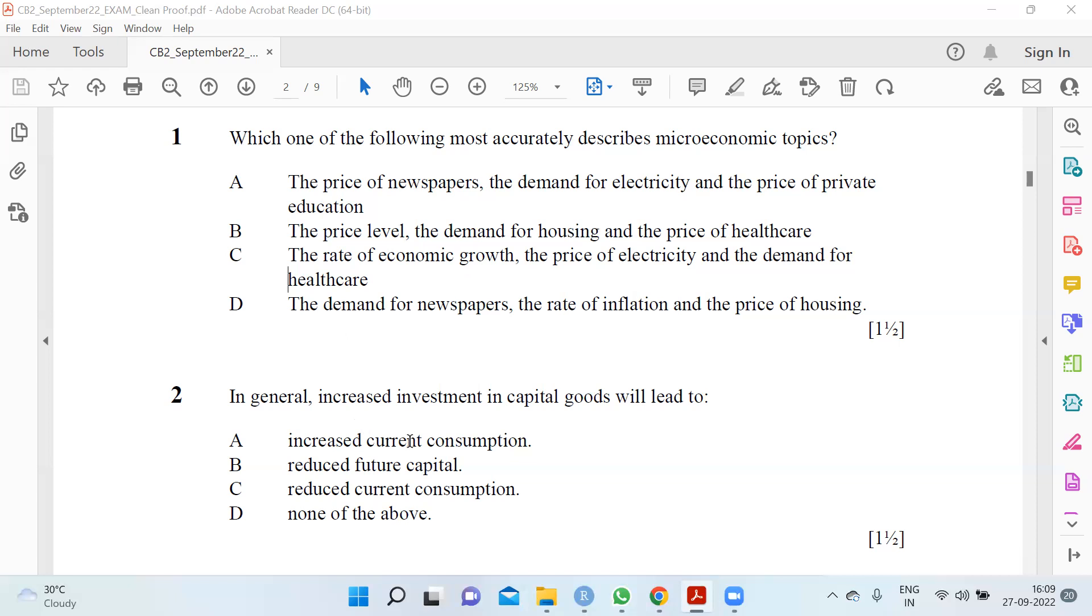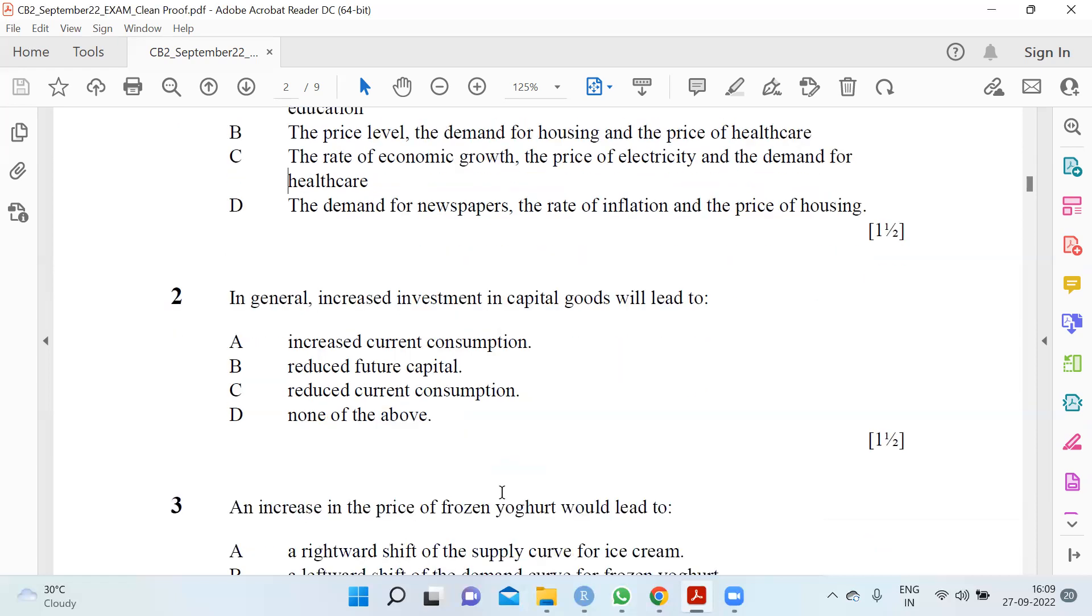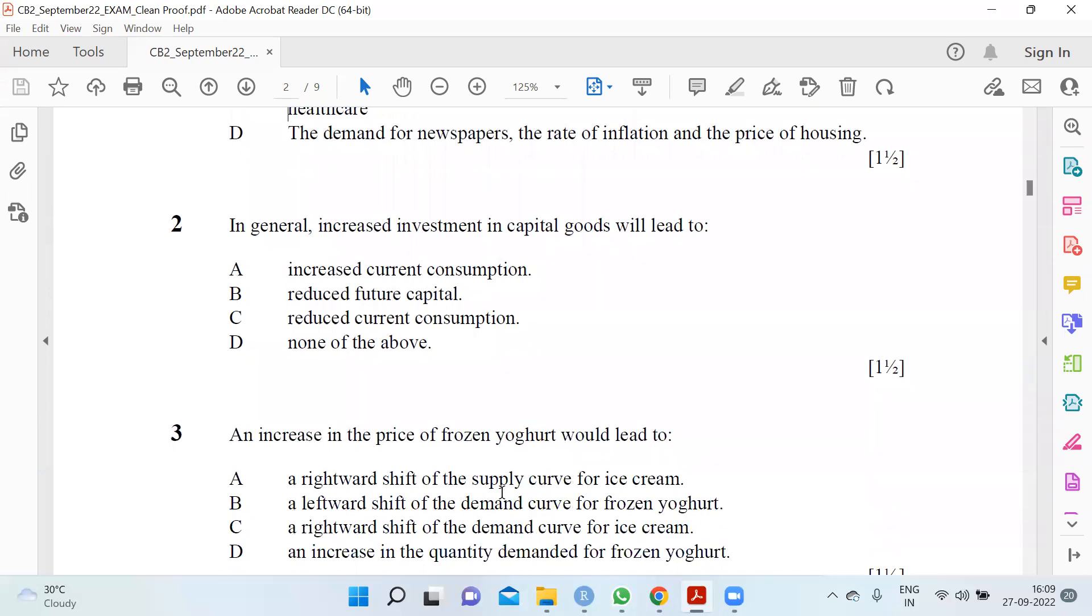In general, increased investment in capital goods will lead to reduced current consumption. This is again very direct. An increase in the price of frozen yogurt will lead to a rightward shift of the demand curve for ice cream because frozen yogurt and ice creams are related to each other.